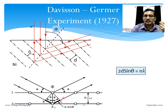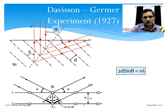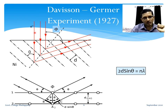Bragg's law was derived in the first unit when we discussed x-rays. It is the condition for maximum intensity in x-ray diffraction. For two rays scattered from consecutive adjacent planes of a crystal, the path difference is d sin θ plus d sin θ, where d is the interplanar distance. So total path difference is 2d sin θ, which must equal nλ. The same formula can be applied here.